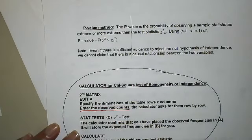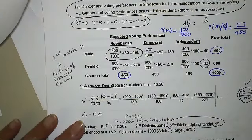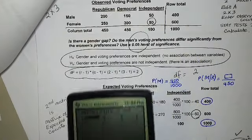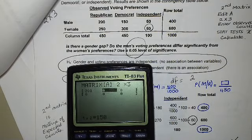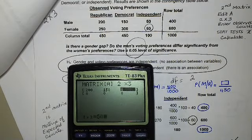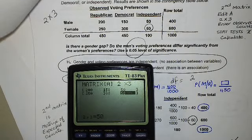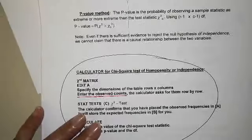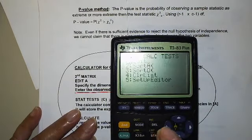So now it gives you a place to input the 2 by 3 matrix that you have. And now we're going to put the observed matrix in. It says here, enter the observed counts. And you go across the row. So getting back to my matrix, I'm going to go put these numbers in. 200, 150, 50, 250, 300, 50.